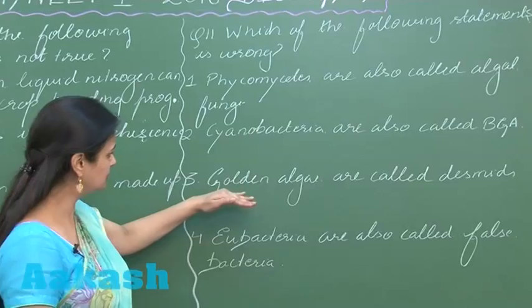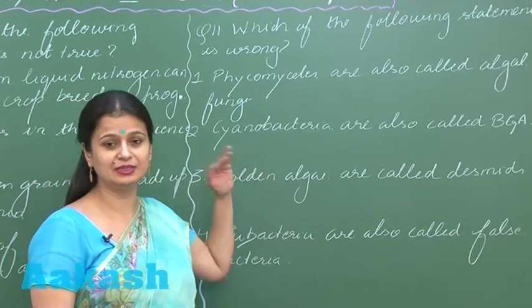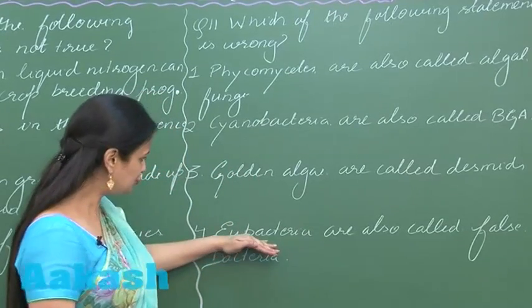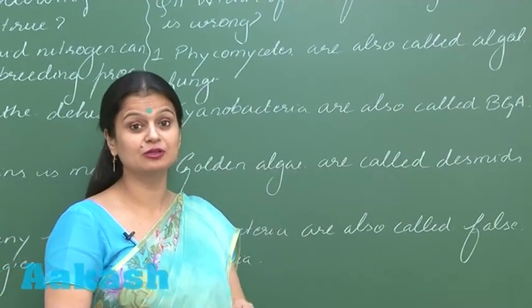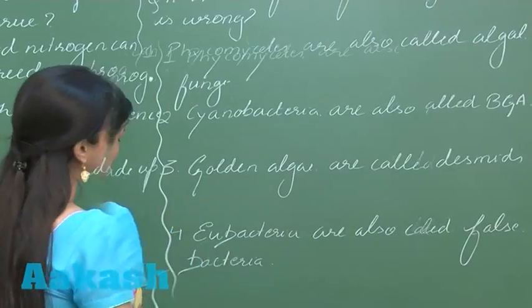Golden algae are also called desmids. They are protists belonging to the kingdom Protista. Eubacteria are also called false bacteria? No, it's not false, that's the true bacteria.